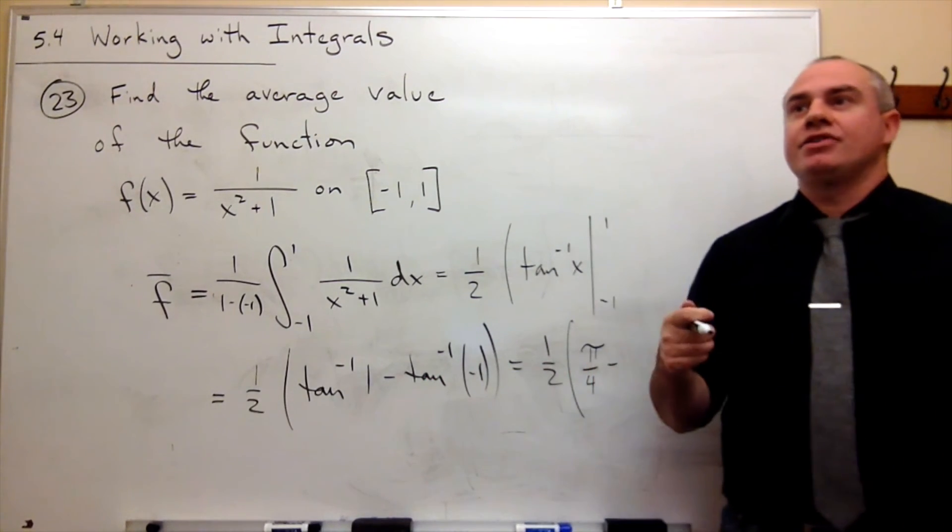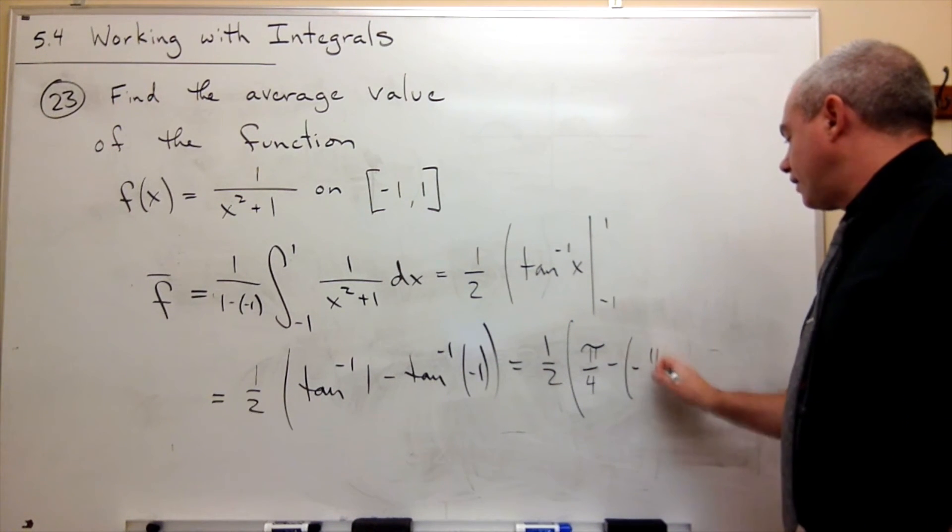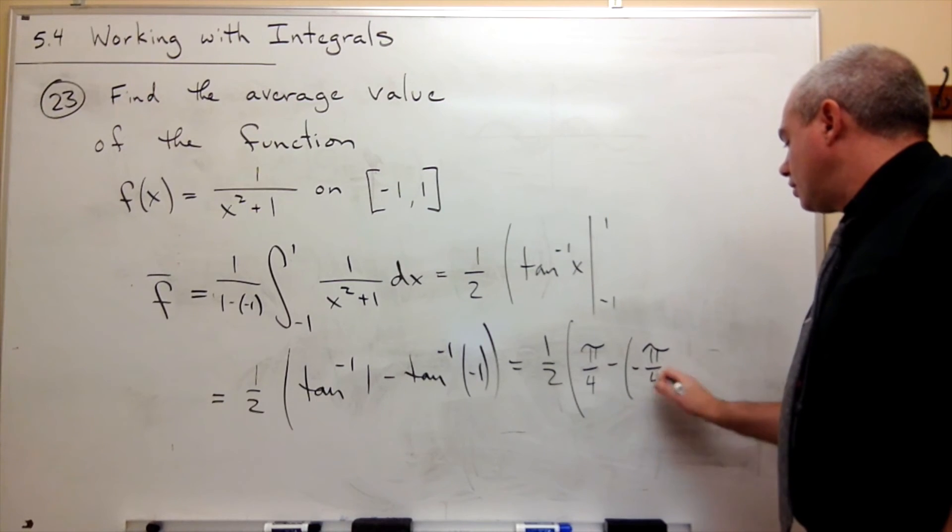In other words, tangent of what angle gives me negative 1? And the answer is negative pi over 4.